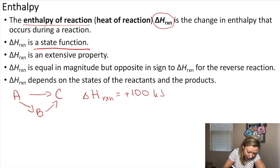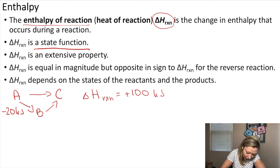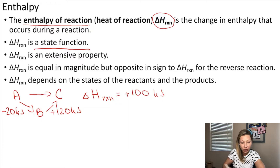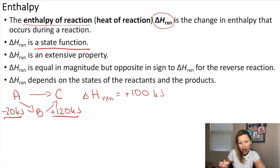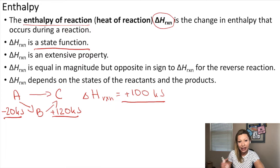For example, if you go from A to B, the enthalpy of that reaction might be minus 20 kilojoules. And from B to C, it's going to be plus 120 kilojoules. So when you add minus 20 to plus 120, you are going to get 100 kilojoules — exactly the same amount, no matter which route you are taking.